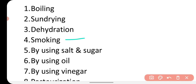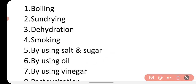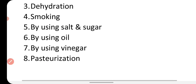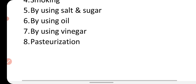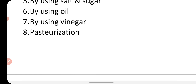By smoking we can preserve food items. By using salt and sugar we can inhibit the growth of microorganisms. By using oil and vinegar — like we use oil in pickles — we can keep food safe from microorganisms for a longer duration. The very famous method of milk preservation is pasteurization, in which we boil the milk and then suddenly chill and cool it before storing.